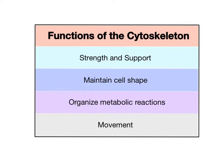The proteins of the cytoskeleton also organize metabolic reactions. They help ensure that reactants and products are moving in their required directions to their specific locations within the cell, so the cell's physiology can be carried out in an efficient and organized manner.